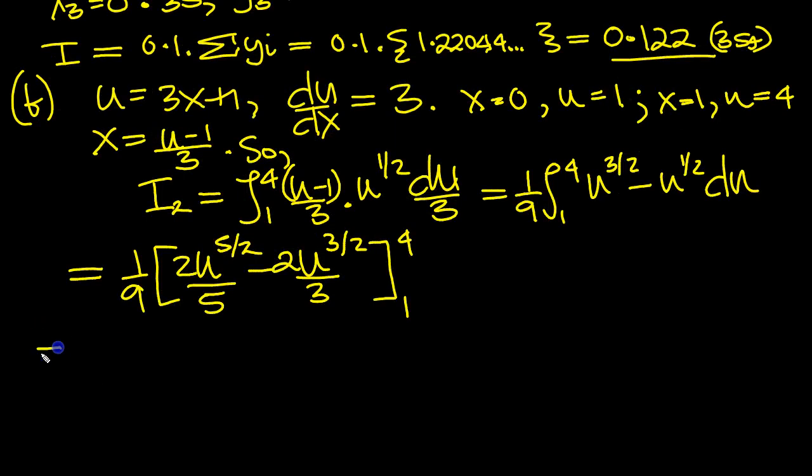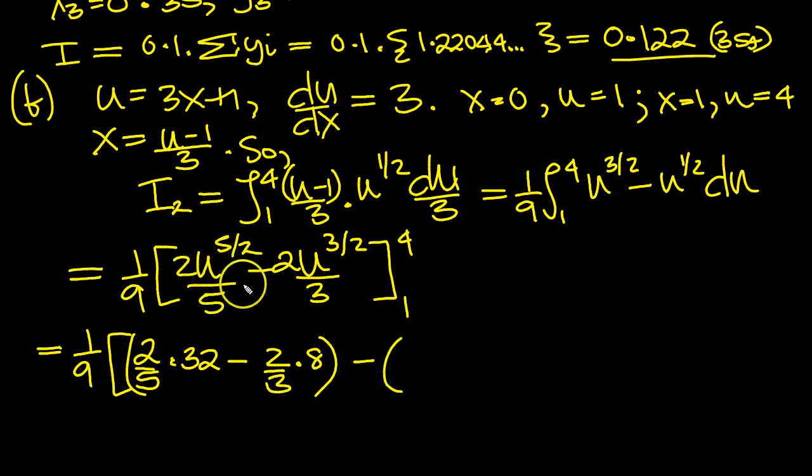So let's give ourselves some room then. It's 1 ninth, put the top value in. So we get 2 fifths, put the 4 in, 4 to the half is 2, and it's 2 to the 5, so it's 2 fifths. 2 to the 5, which is 32. Minus 2 thirds, and put 4 in here, 4 to the half is 2, and 2 cubed is 8. So that's the top value. Take away the bottom value, put 1 in. 1 to the power is 1, so that's simply 2 fifths minus 2 over 3.